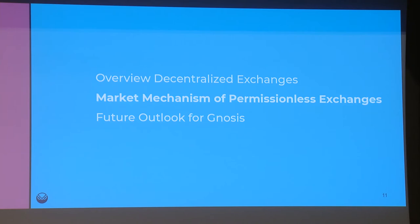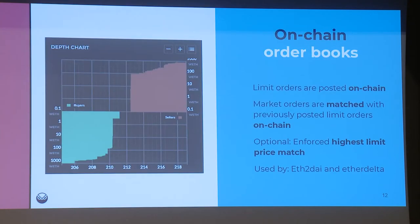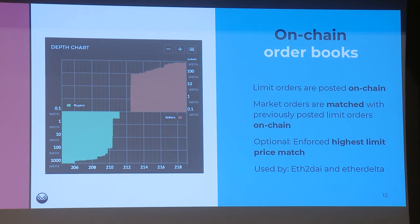Let's look at the different market mechanisms. The first one, originally implemented by EtherDelta, is simply on-chain order books. Customers send in limit orders, which are stored on-chain. The order book looks something like what you see here from EtherDelta. Orders are then matched with previously posted limit orders. EtherDelta also has the cool feature of sorting all orders by price, so if you put in a market order, it is ensured that you first match the limit orders with the highest price.